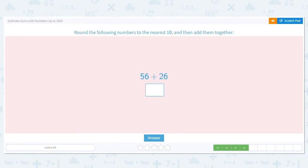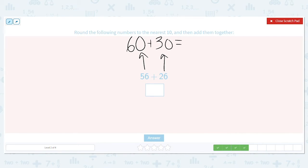Alright, let's round these numbers. We have 56. What does 56 round to? Does it round to 50 or 60? Rounds up to 60. How about 26? Does that round to 20 or 30? 30, because it's closer to 30. Alright, now I can add. 0 plus 0 is 0, and 6 plus 3 equals 9. So 60 plus 30 equals 90. 90 is my estimate.